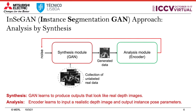We follow an analysis-by-synthesis approach. For synthesis, we train a generator that takes as input vectors of noise representing pose parameters and learns to generate multiple-instance depth images. Our analysis module, or encoder, learns to take in a synthesized depth image and produce the parameters of instances that generated the image. When well trained, the GAN will synthesize realistic depth images and the encoder module will know how to disentangle the instances from it.